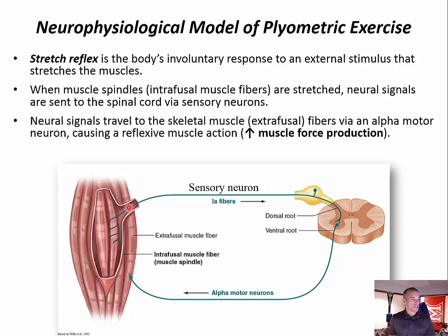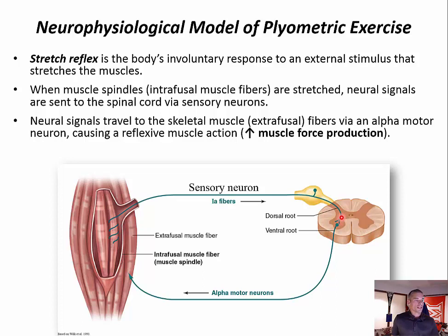Muscle spindles are embedded within the belly of skeletal muscle. When they are stretched, as occurs during an eccentric muscle action, the muscle spindles are activated and send neural signals to the spinal cord via sensory neurons. These neural signals are received within the spinal cord, and then the spinal cord sends out signals via alpha motor neurons to the extrafusal muscle fibers, causing a reflexive muscle action and therefore increasing muscle force production.